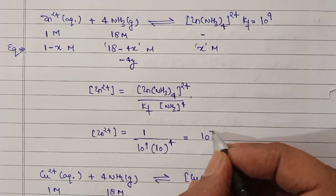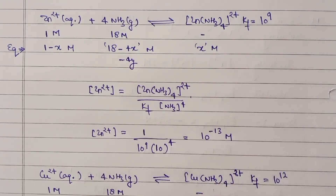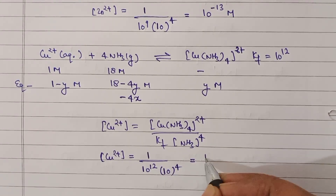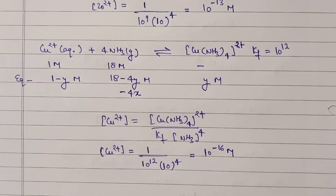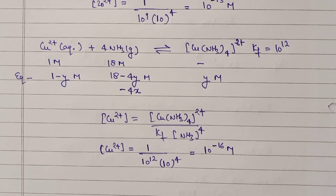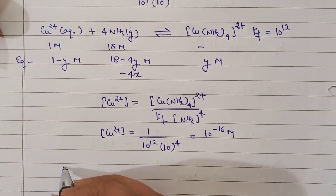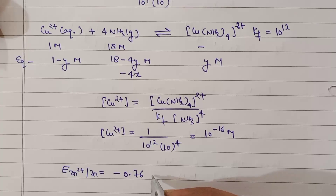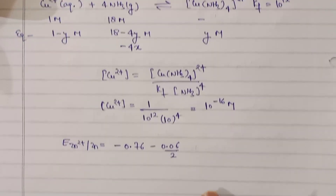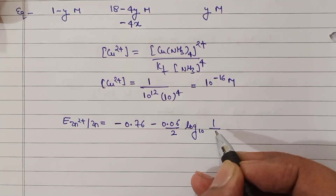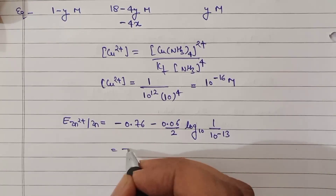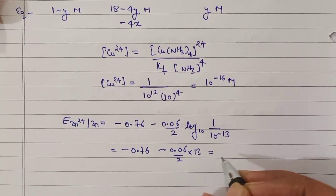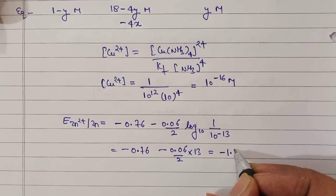The concentration of Zn²⁺ at equilibrium comes out to be 10⁻¹³ molar, and the concentration of Cu²⁺ comes out to be 10⁻¹⁶ molar. Now putting [Zn²⁺] = 10⁻¹³ into the Nernst equation: E(Zn) = −0.76 − (0.06/2) × log(1/10⁻¹³) = −0.76 − (0.06/2) × 13, which gives E(Zn) = −1.15 V.